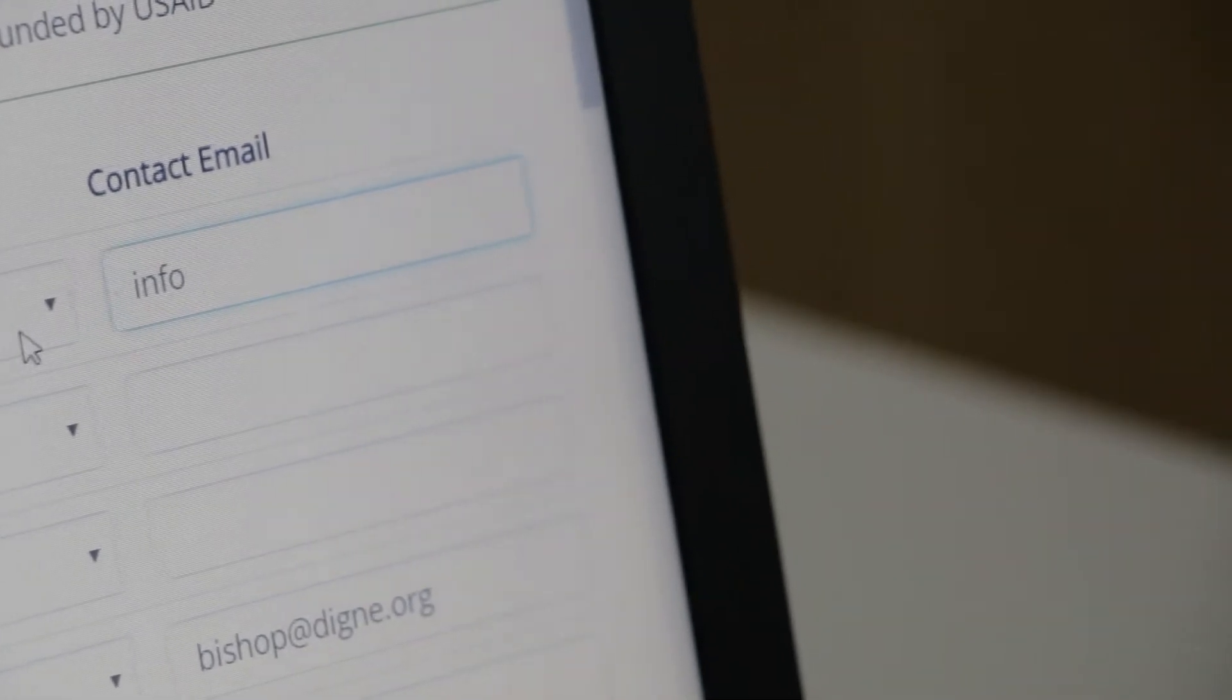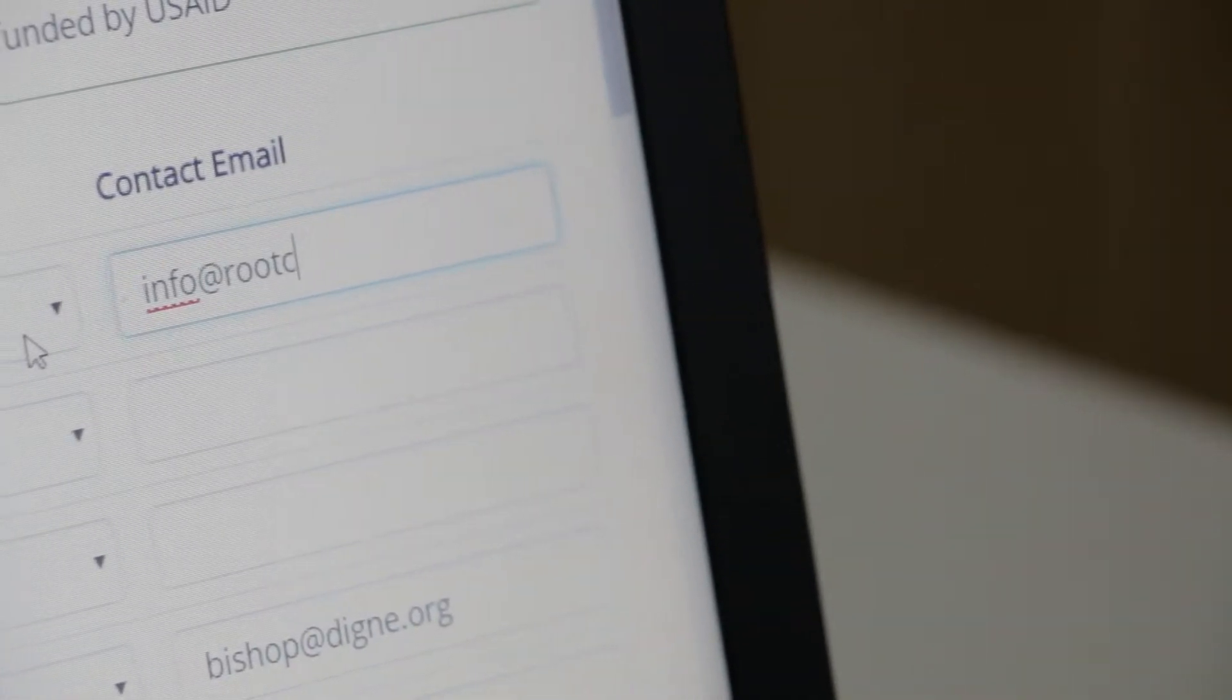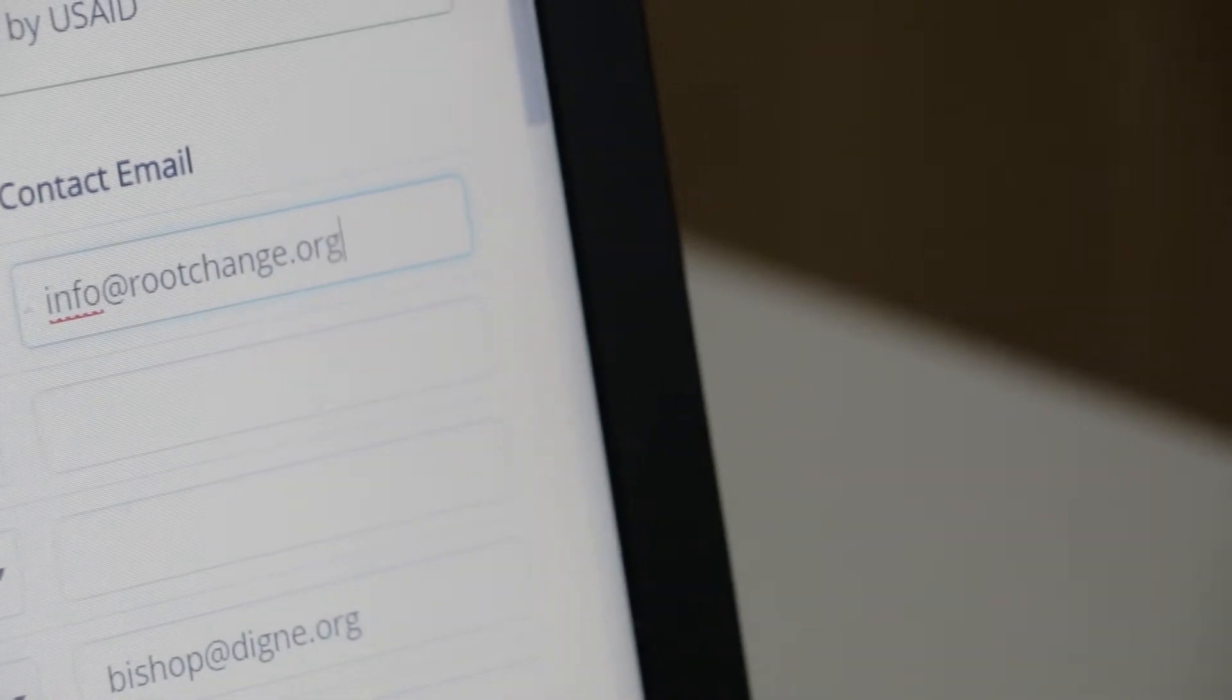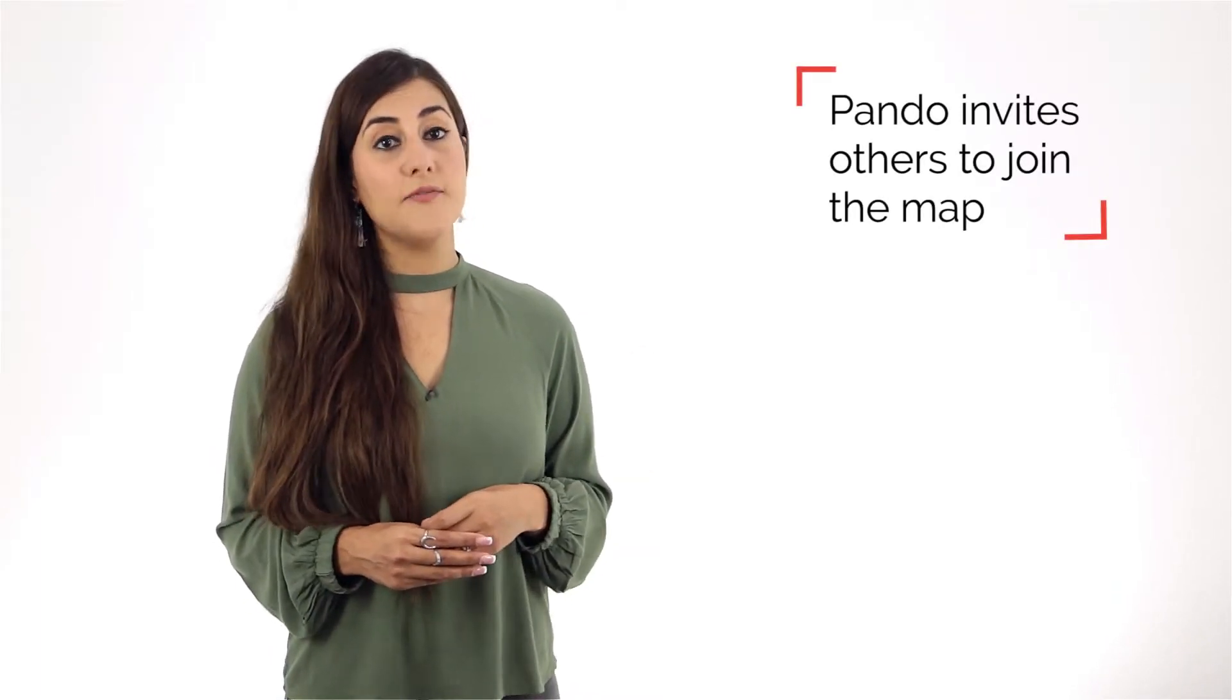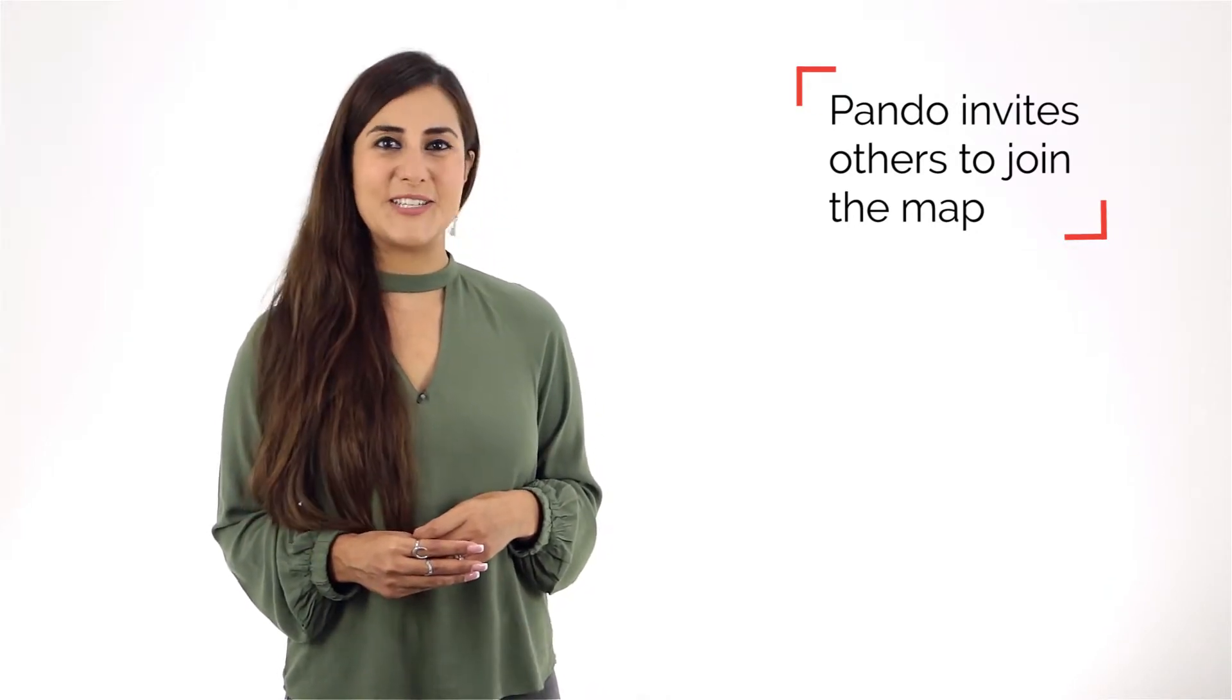Lastly, a user can input an email contact for the actor they've listed. If the actor is an organization, not an individual, the user is encouraged to put an email of a key contact that they can go for support in that institution. By adding emails, Pando will automatically invite a user contact to also complete the survey and map their relationship.